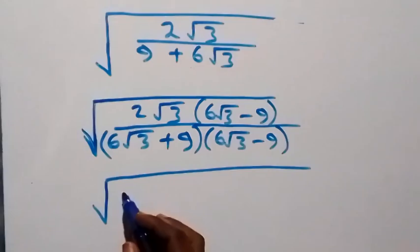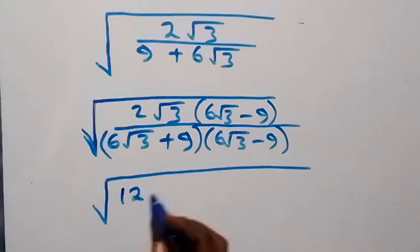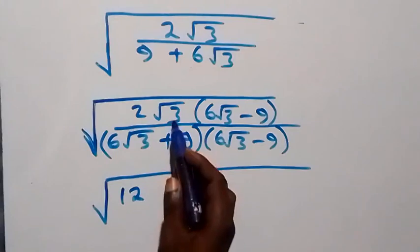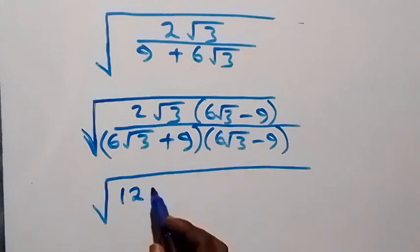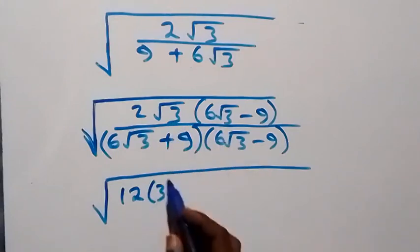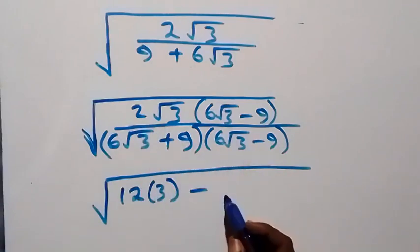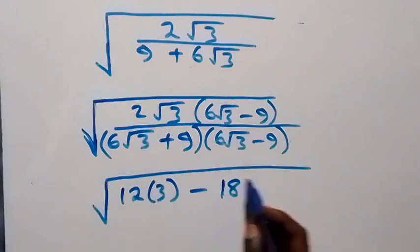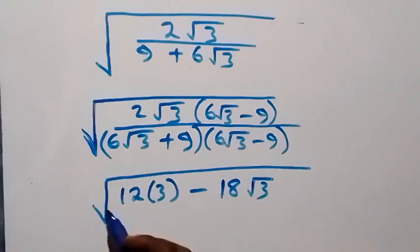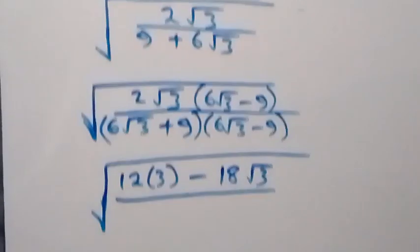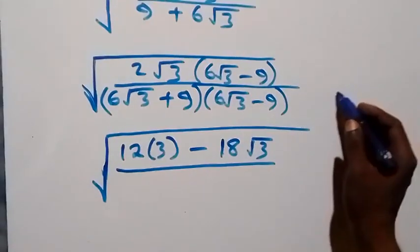2 times 6 gives 12, and root 3 times root 3 gives 3, so that's 12 times 3. Then minus 2 times 9, which is 18, then times root 3.